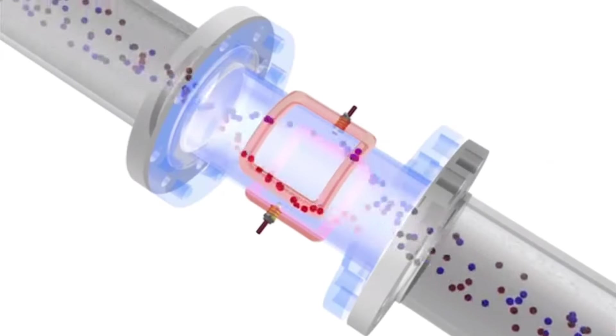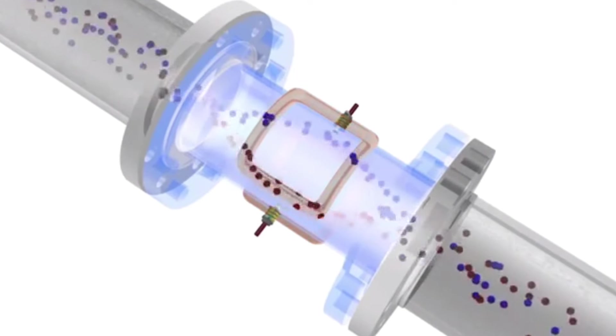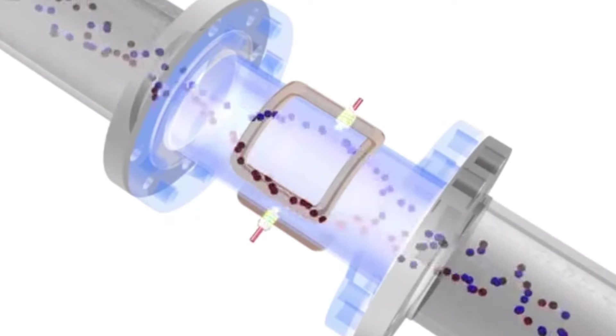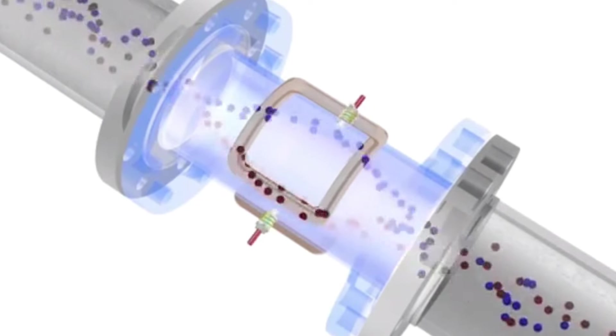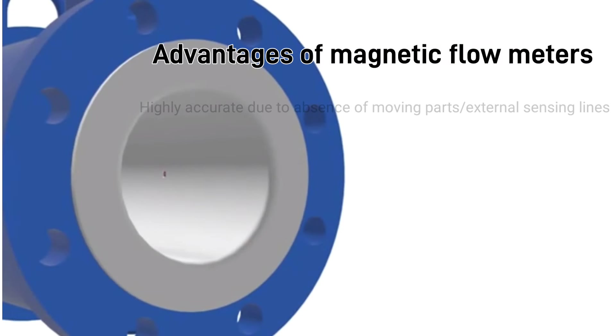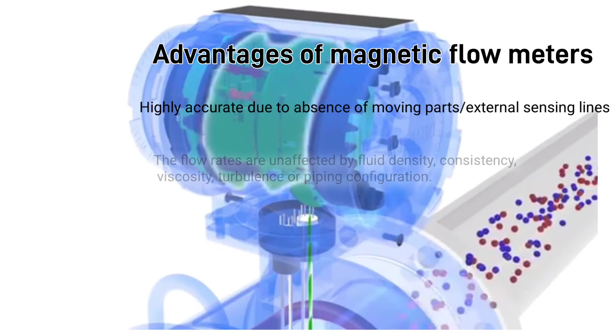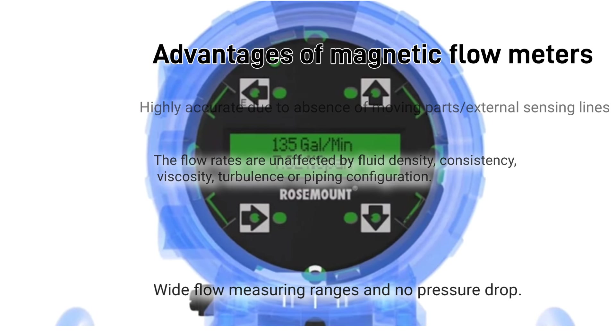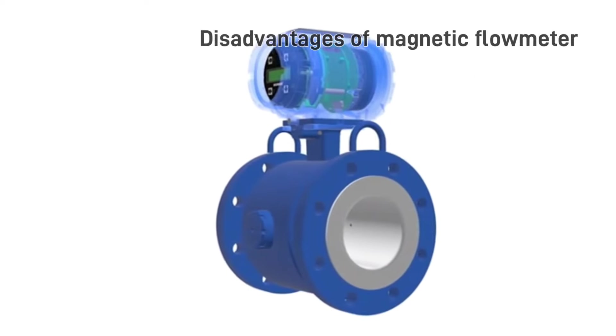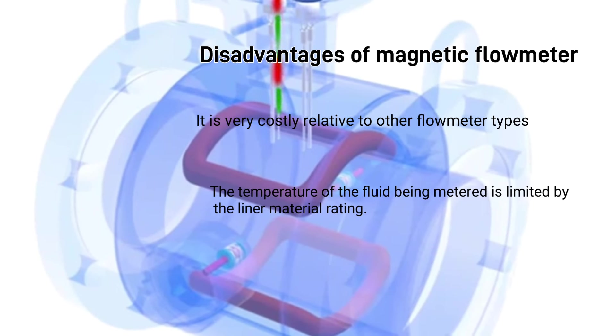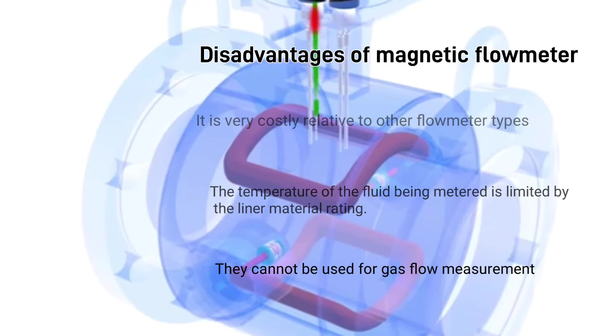Magnetic flow meters operate on Faraday's law of magnetic induction. When a conductive fluid moves in a magnetic field, a voltage is generated between two electrodes at right angle to the fluid velocity and field orientation. The flow tube has a fixed area and field intensity, so the developed voltage is linearly proportional to the volumetric flow rate. Advantages: highly accurate due to absence of moving parts and external sensing lines, the flow rates are unaffected by fluid density, consistency, viscosity, turbulence, or piping configuration, wide flow measuring ranges, and no pressure drop. Disadvantages: very costly relative to other flow meter types, the temperature of the fluid being metered is limited by the liner material rating, they cannot be used for gas flow measurement.